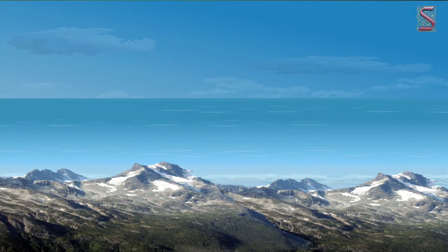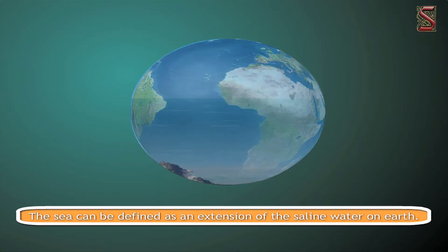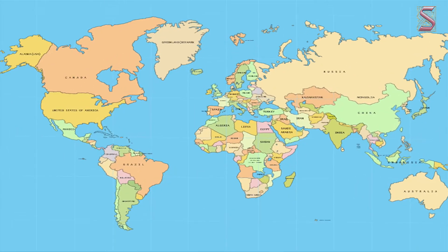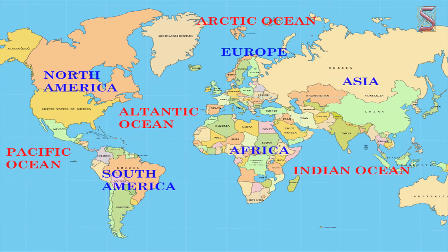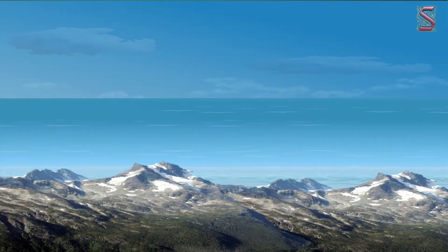The sea can be defined as an extension of the saline water on earth. The oceans are the large sea areas or the large water bodies which are separated by the continents. So, in today's class, let's explore seas and oceans that make up our planet.